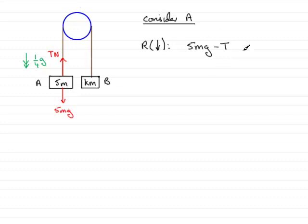And that resultant force equals the mass times acceleration. Now the mass is 5m, so I can put that in. And we know that the acceleration is a quarter G.